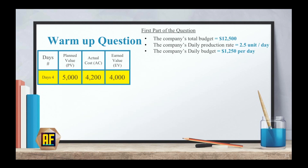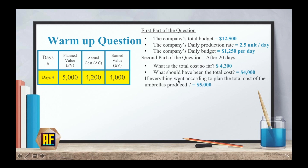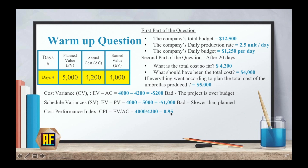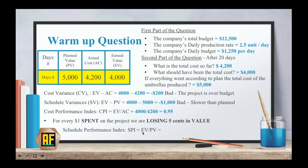Let's start answering the questions from the first video. The cost variance, CV, is EV minus AC, which equals negative $200, meaning the project is over budget by $200. The schedule variance, SV, is EV minus PV, which equals negative $1,000, meaning we are going slower than planned. The cost performance index, CPI, is EV over AC, which equals 0.95, meaning for every dollar spent we are losing $0.05 in value. The schedule performance index, SPI, is EV over PV, which equals 0.8, meaning the project is going at a pace 20% slower than originally planned.